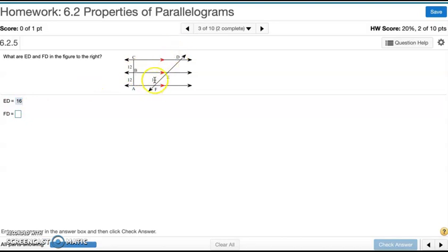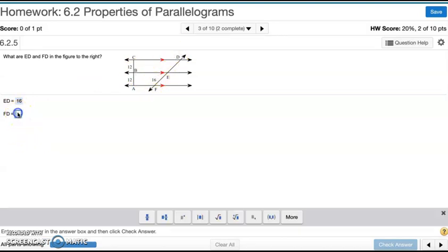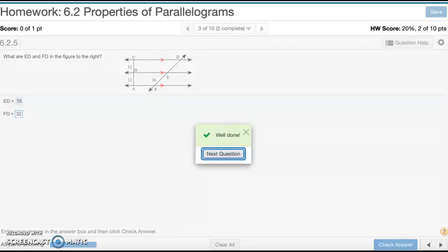FD, we just add 16 to 16 and we get 32. And that's number 3.